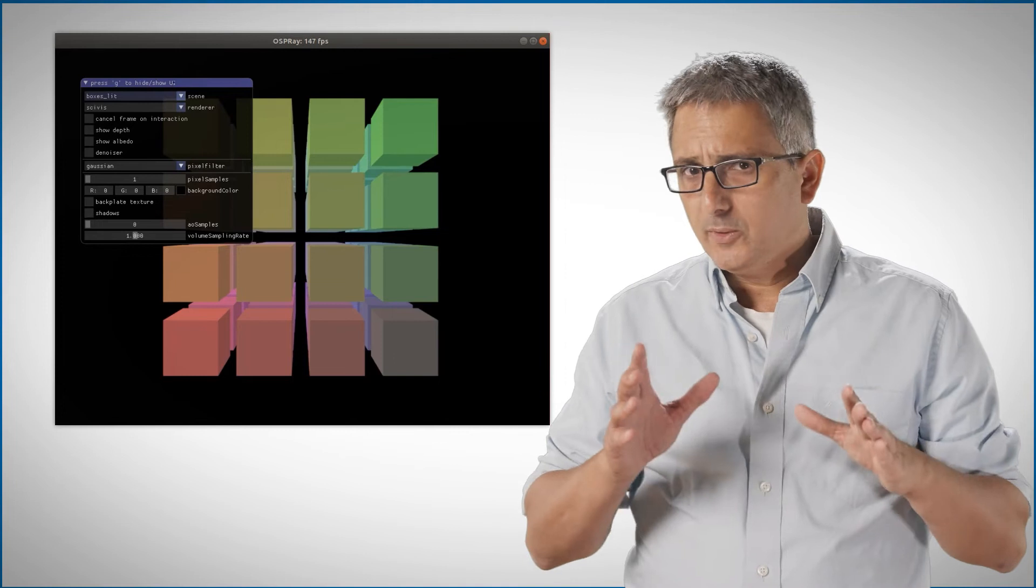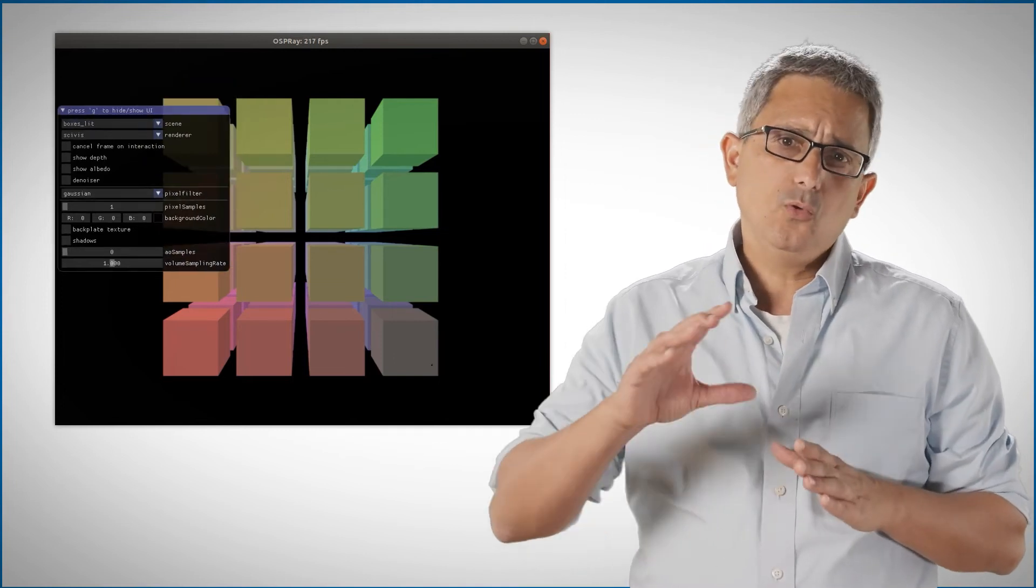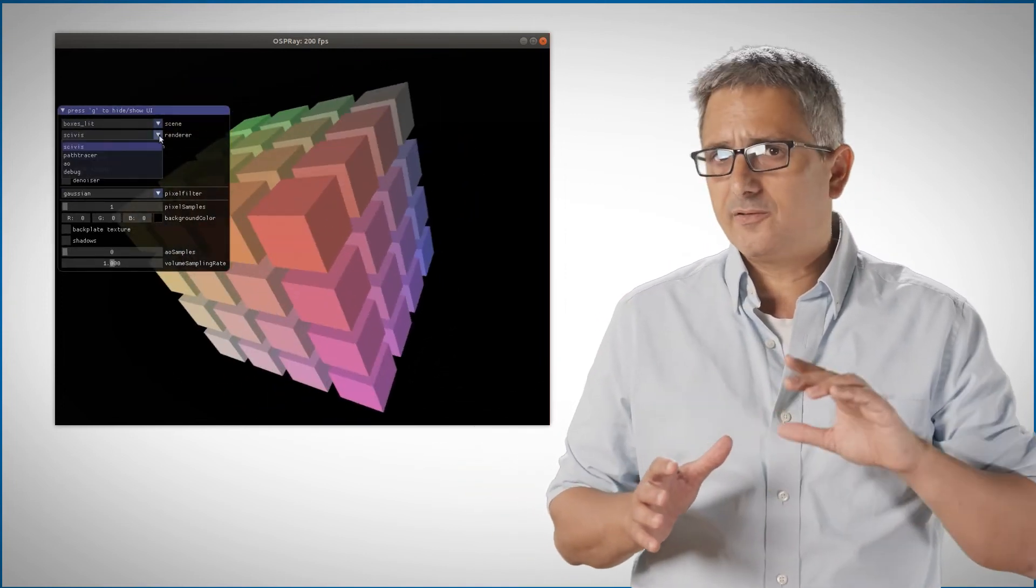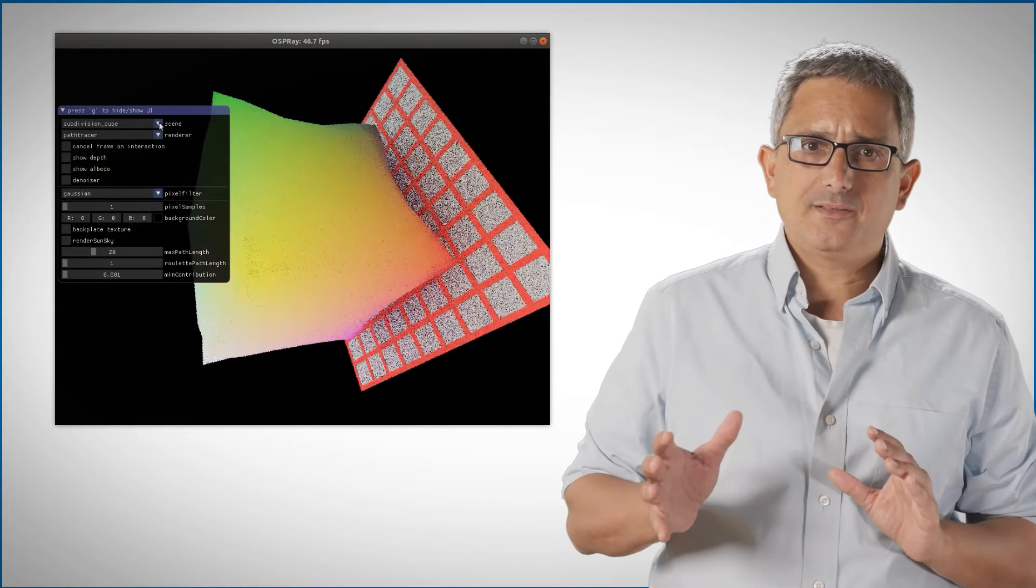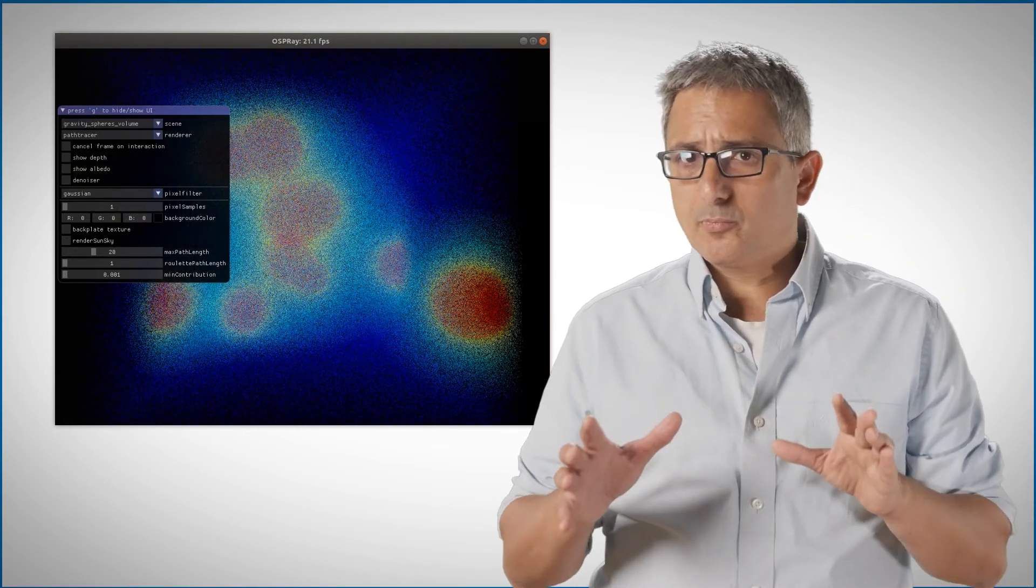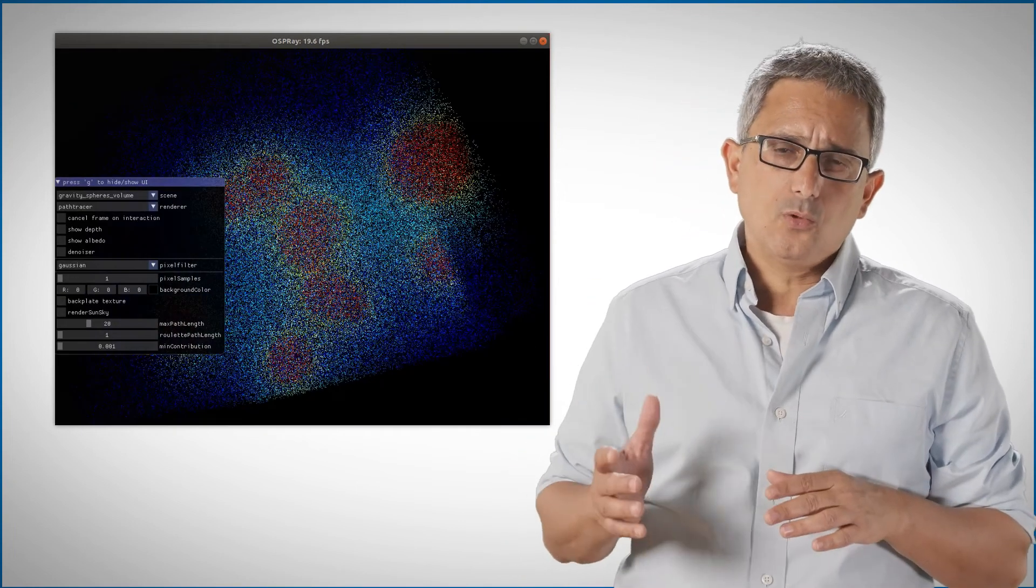And I'm getting a new window. I can rotate the view with my mouse, I can choose a different renderer, I can choose a different scene, and play with the parameters. This is the OSPRay example, so you can view the code on GitHub.